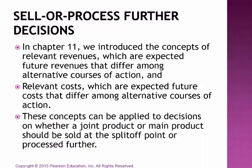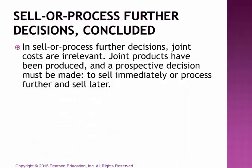These concepts can be applied to decisions on whether a joint product or main product should be sold at the split-off point or processed further. In sell-or-process-further decisions, joint costs incurred up to the split-off point are irrelevant. Under either Plan A or Plan B, those joint costs would have been incurred, and they are considered sunk costs. There's nothing we can do to go back and change those costs — they are sunk.